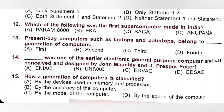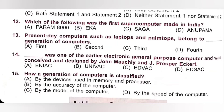Question 14: Dash was one of the earlier electronic general purpose computers and was conceived and designed by John Mauchly and J. Presper Eckert. A. ENIAC, B. UniVac, C. EDVAC, D. HSEC. ENIAC was one of the earlier electronic general purpose computers. Option A is the correct answer.